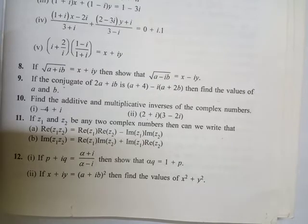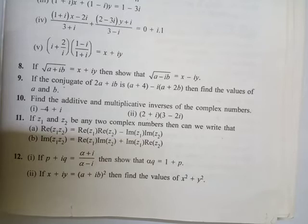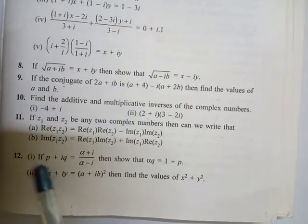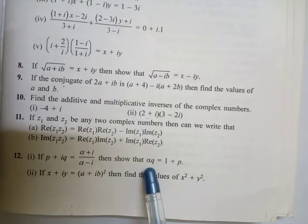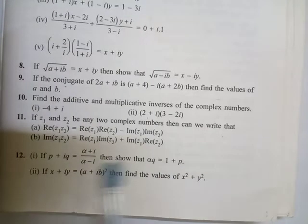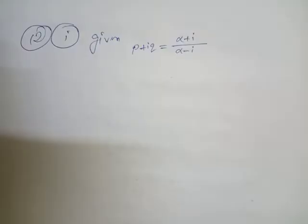We are going to solve Exercise 2.2, Question 12, as you can see in the video. If p + iq equals this value, then show that αq = 1 + p. Let's have a look at how to solve this one. Given: p + iq = (α + i) / (α - i).